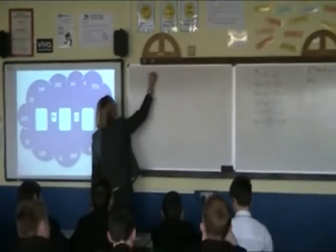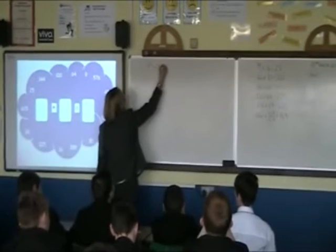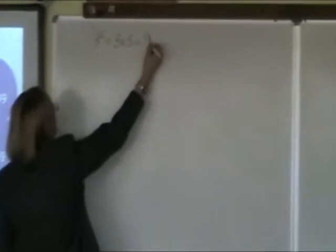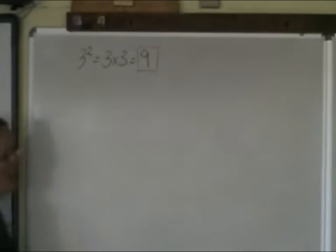So for example, 3 squared is 3 times 3, which is 9. So 9 is your square number. Are we happy with that?